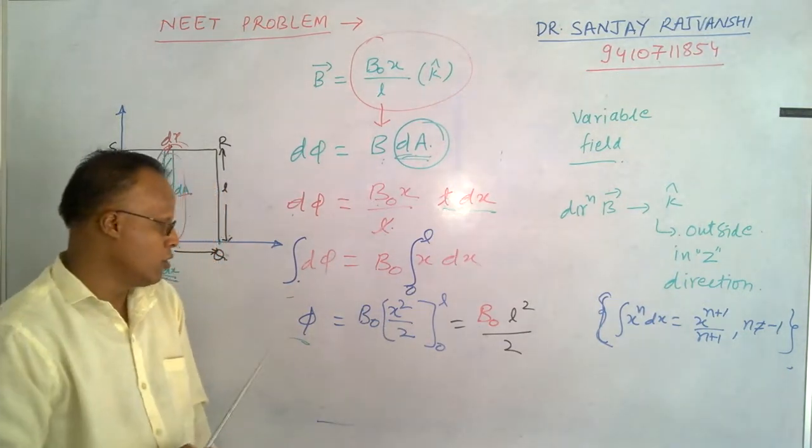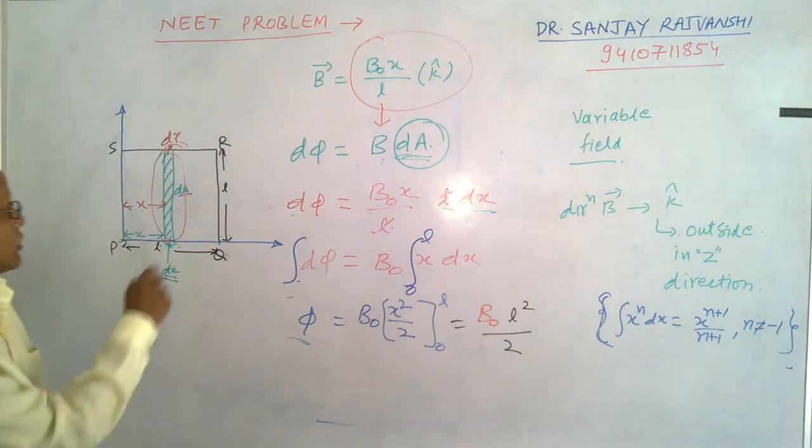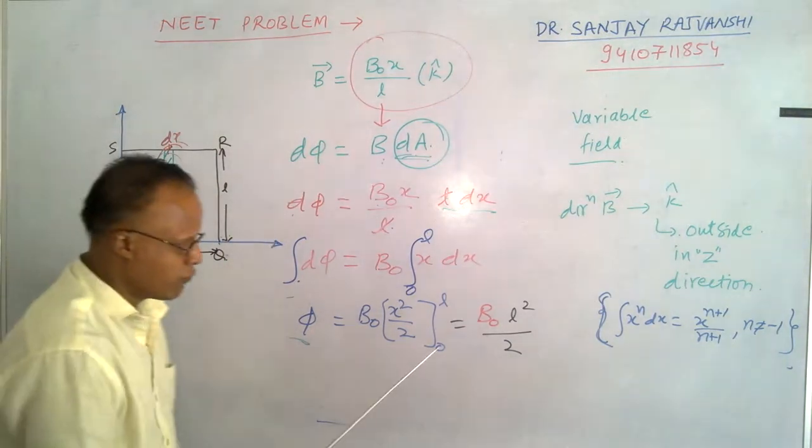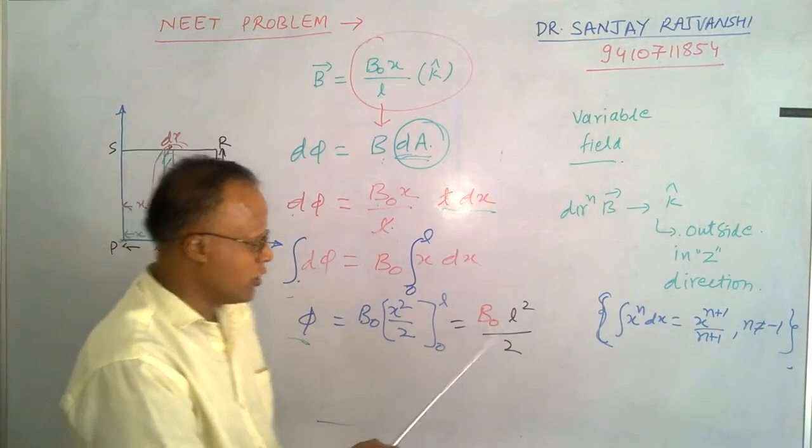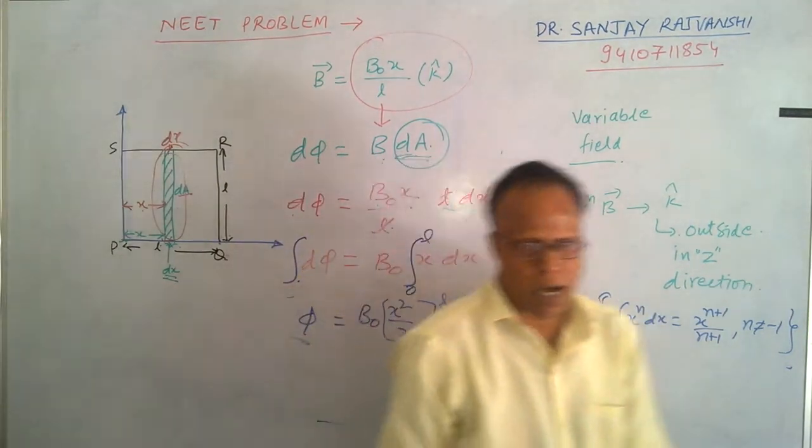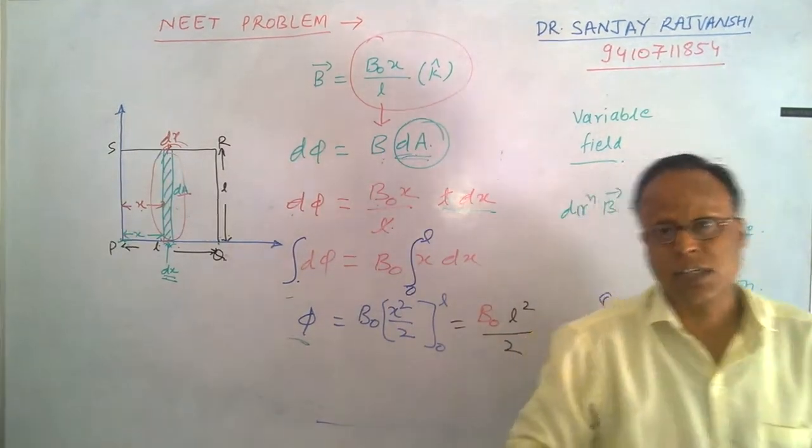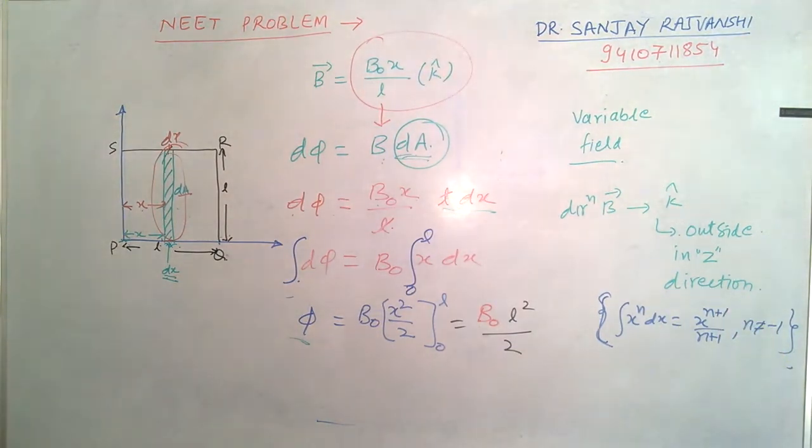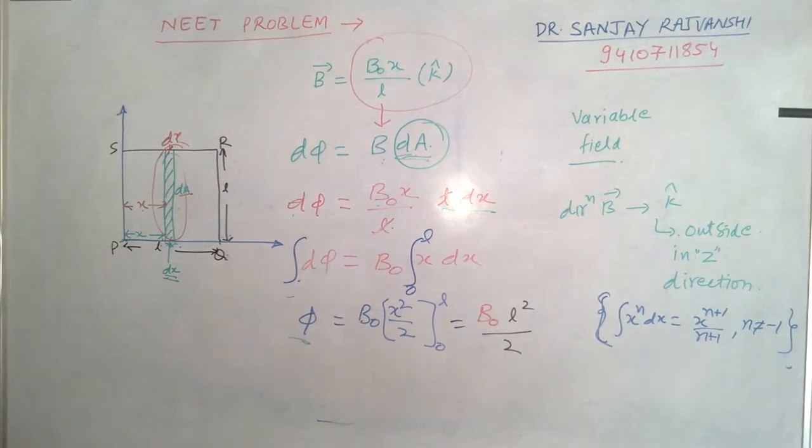The flux through this whole system when PQRS is placed in a uniform magnetic field comes out B naught L square by 2. Thank you very much. If you have any doubts, comment box. Thank you.